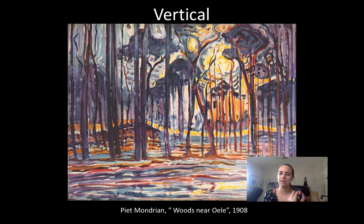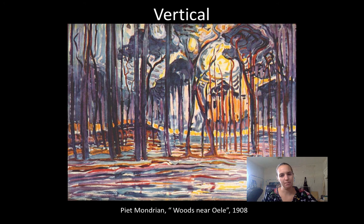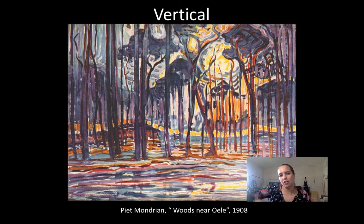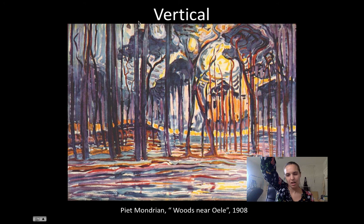Vertical lines don't show a lot of movement, but there's a sense they could start moving — like someone standing still who just needs to lift a foot to begin walking. When vertical lines go up very high, as in a cathedral, they create a sense of grandeur, awe, and spirituality. The artist Mondrian alludes to this — the trees go off the page, and we have to imagine how grand and tall they are, making us feel small.